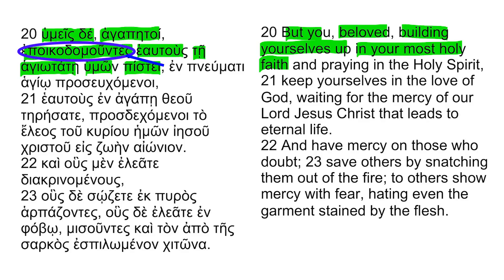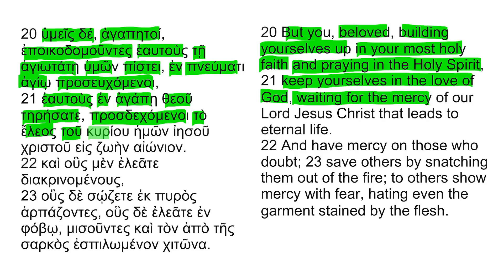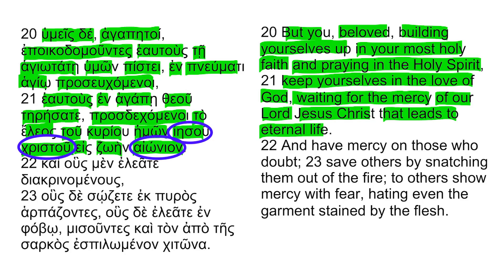The scribe inserted 'the building yourselves up' after this segment in the manuscript. Enumati hagio praseo kamanoi — and praying in the Holy Spirit. Heautos en agape theo teresate — keep yourselves in the love of God. Praste kamanoi ta eleas — waiting for the mercy. To curio hemon Jesu Christo — of our Lord Jesus Christ. Aes zoen aeonion — that leads to eternal life. It appears that the scribe had miscopied 'Jesus Christ' and 'eternal,' and instead just inserted them at the end of this sentence.